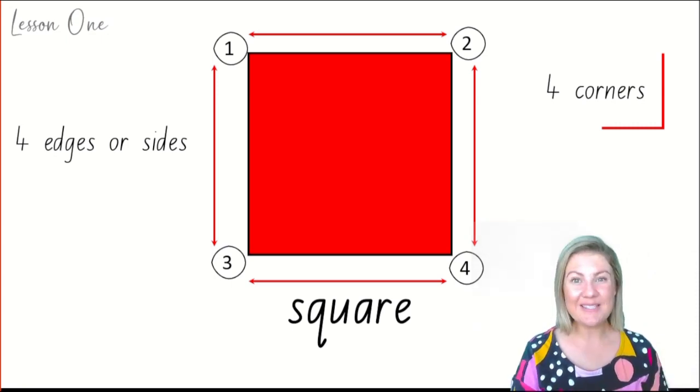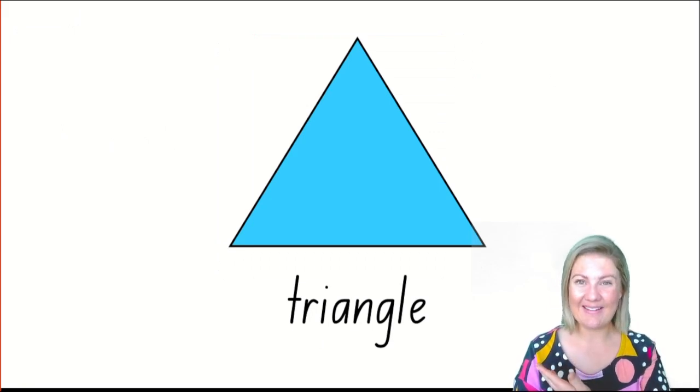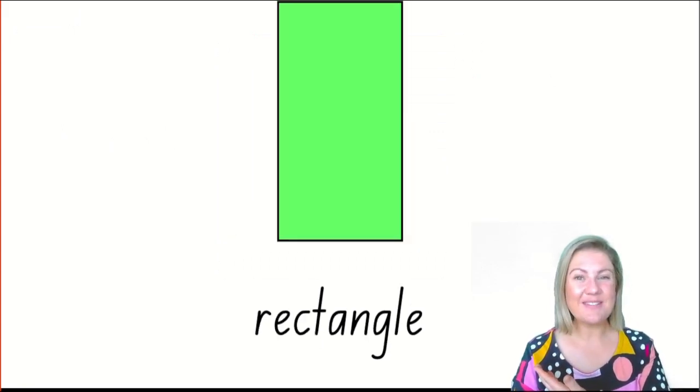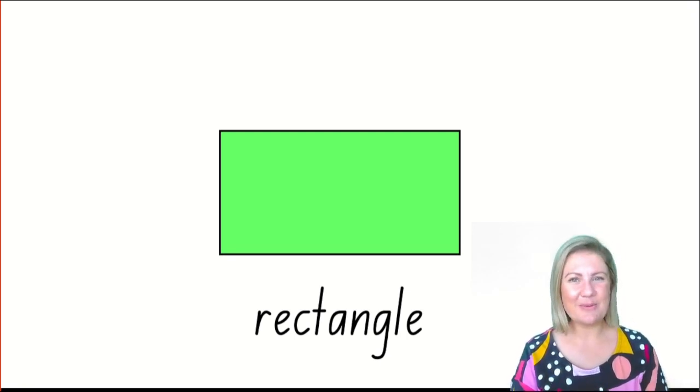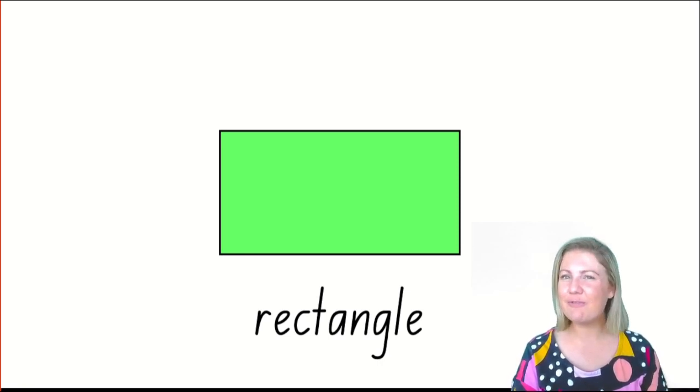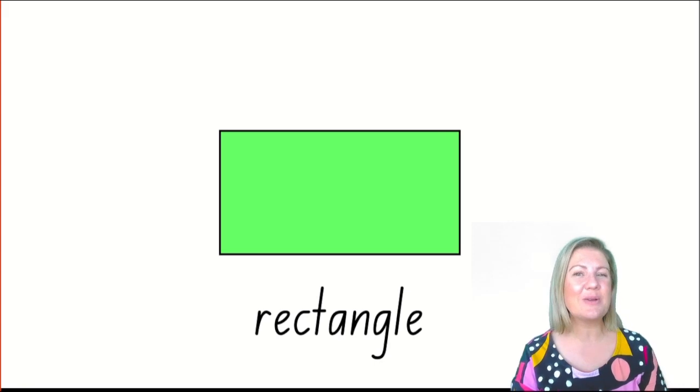During our work together on shapes, we're going to look at other shapes. You might know a triangle. You might have seen rectangles before. We're going to do a lot more work together on shapes. Today we looked at circles and squares, but we looked at that word features, the things that we notice about shapes.